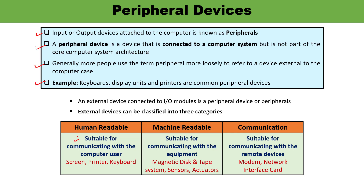The second kind of device is machine readable — devices which are suitable for communication with equipment. Machines and computers can read if information or data is stored on magnetic disk, tape, sensors, or actuators. These are external devices which can effectively communicate. The third kind is external devices suitable for communication with remote devices, which falls into the category of communication — for example, modems and network interface cards.